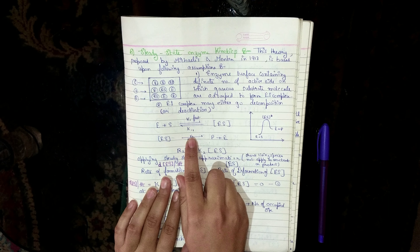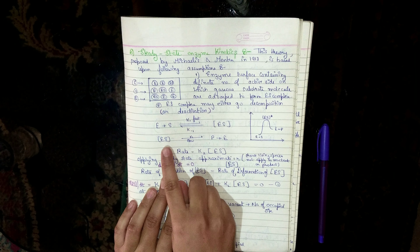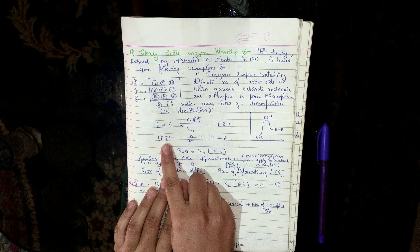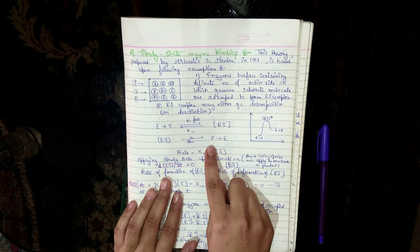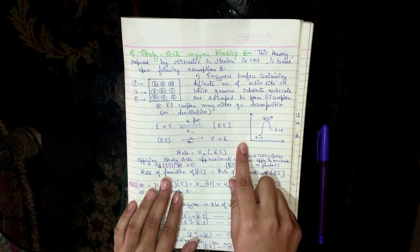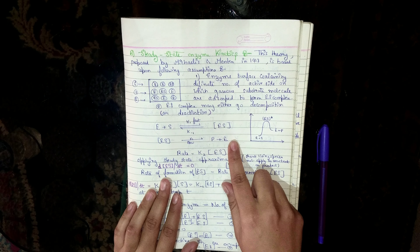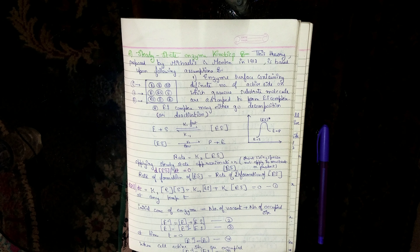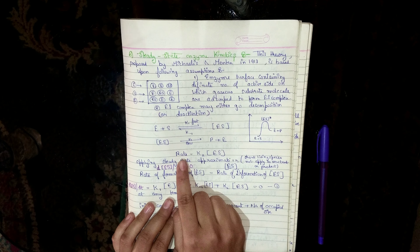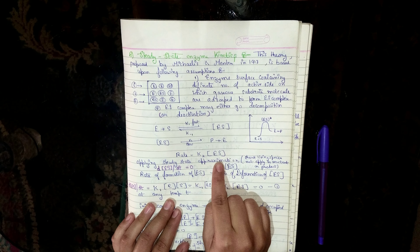This reaction has rate constants k1 and k-1 because it is a reversible reaction. In the second reaction, the enzyme-substrate complex decomposes to give us the product and the enzyme back. The first reaction is fast and the second reaction is slow, so the slow reaction is our rate-determining step. Therefore rate = k2 × [ES].